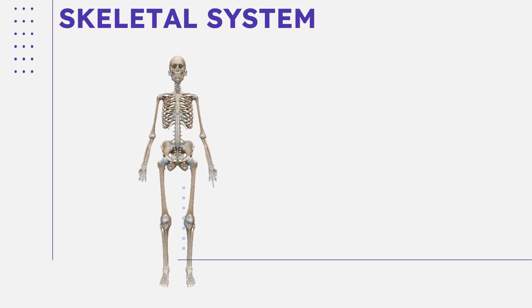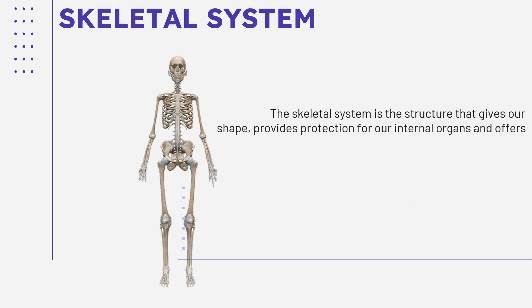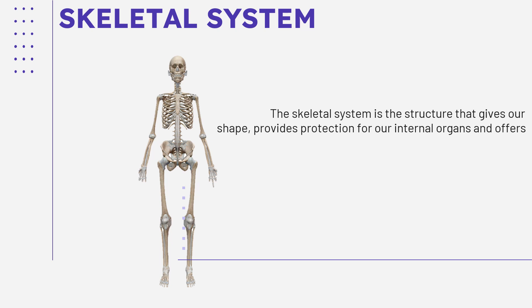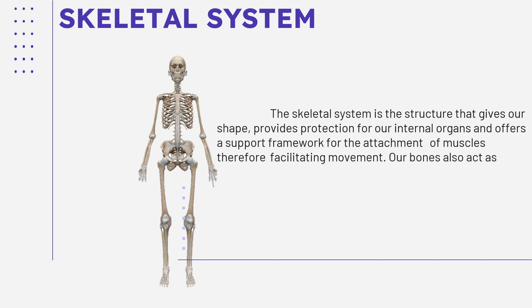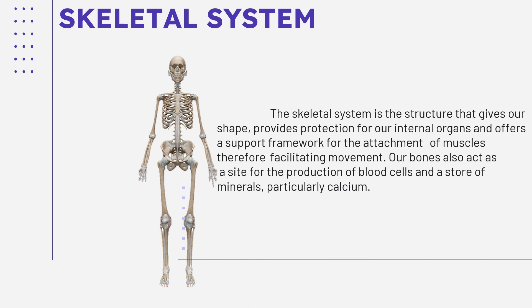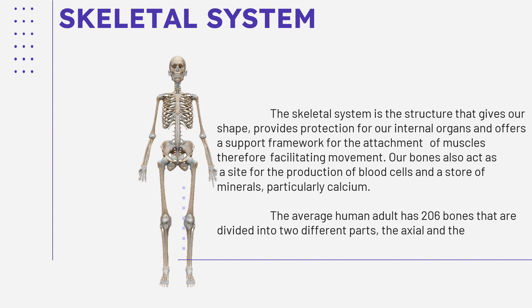The skeletal system gives our body its shape, provides protection for our internal organs, and offers a support framework for the attachment of muscles, therefore facilitating movement. Our bones also act as a site for the production of blood cells and a store of minerals, particularly calcium. The average human adult has 206 bones that are divided into different parts: the axial skeleton and the appendicular skeleton.